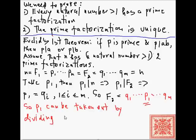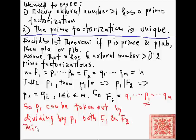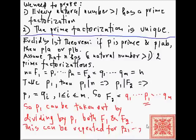We can then do this recursively — or make a formal inductive argument. Once p1 has been taken out, we have f1 divided by p1 and f2 divided by p1, and then we can go on to p2 and do the same. Because p2 will divide f2 and can be taken out of both prime factorizations, and eventually we will run out of primes — and that is how the uniqueness proof is completed.